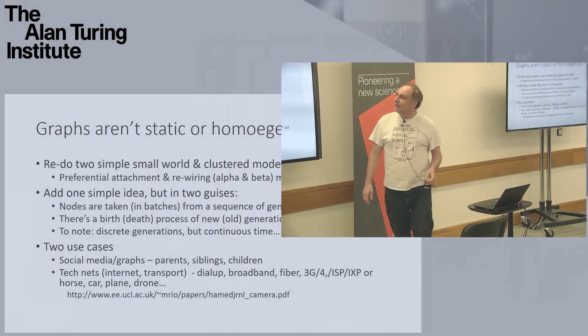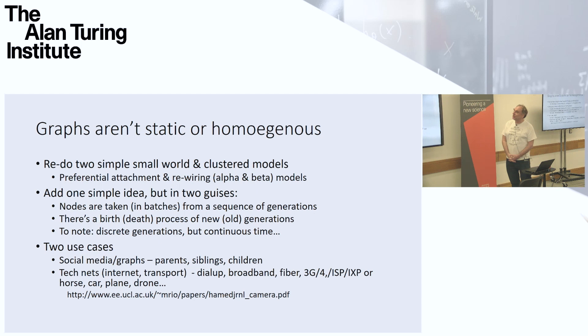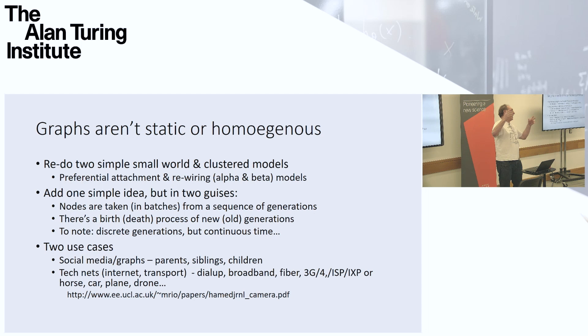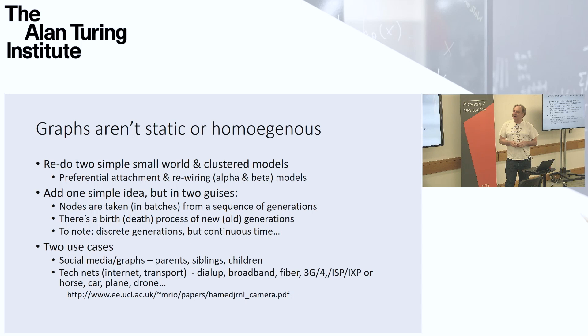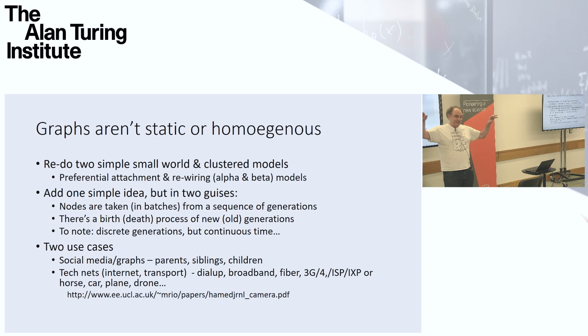The key starting point was sitting in a workshop here about a year and a half ago on networks, where various people talked about the problem that many networks aren't static or homogeneous. Networks grow and shrink — family networks grow and shrink as people are born and die; communication networks grow and shrink as we add or remove links; transportation networks also change. They're also not homogeneous: a family network has adults, children, and retired people; a communication network has wireless, fiber optic, and copper links.